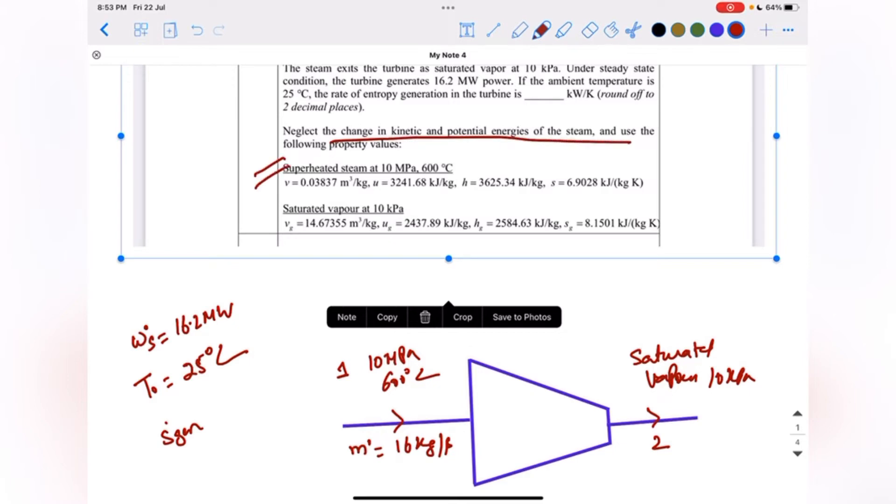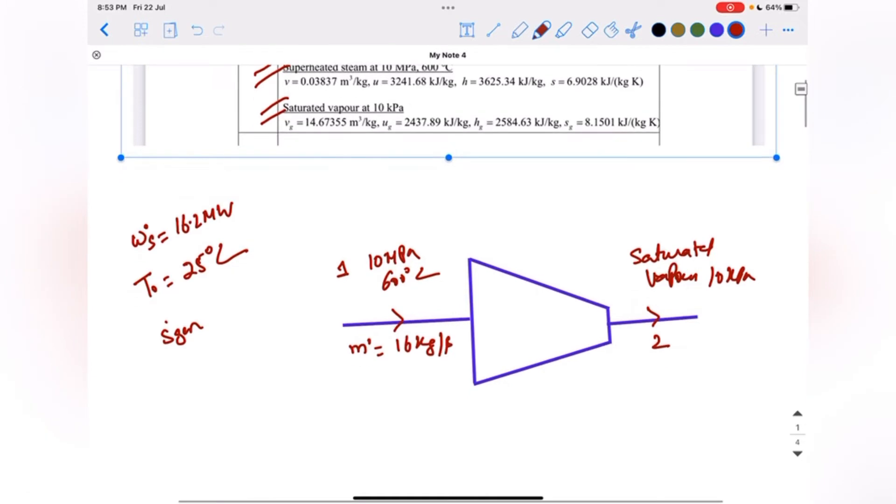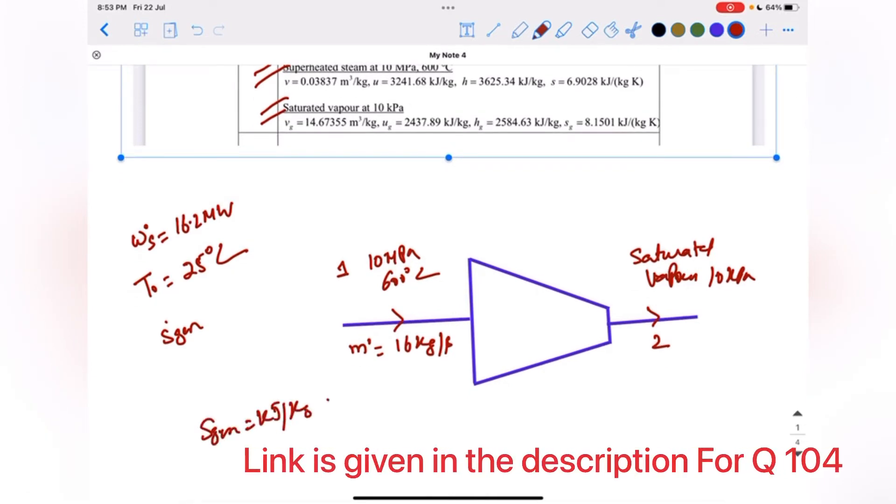It is given the property table. This question is similar to question number 107. In that question, we had to find irreversibility, but here we have to find entropy generation, not the rate of entropy generation, because in that question we had to find s generation in kilojoule per kg, and in this question we have to find rate of entropy generation in kilowatt per kelvin.